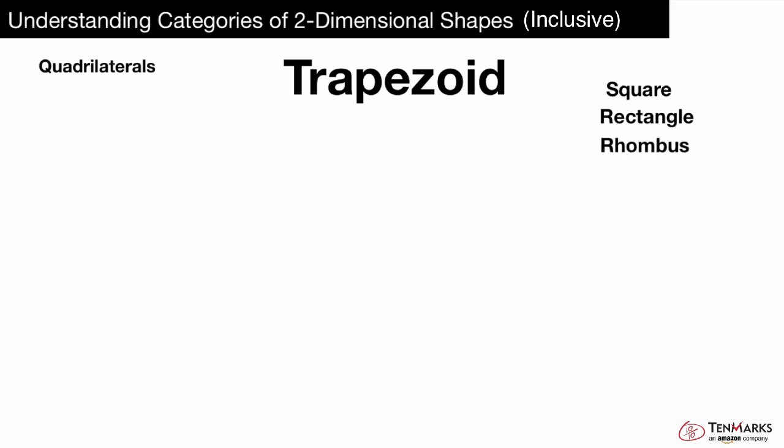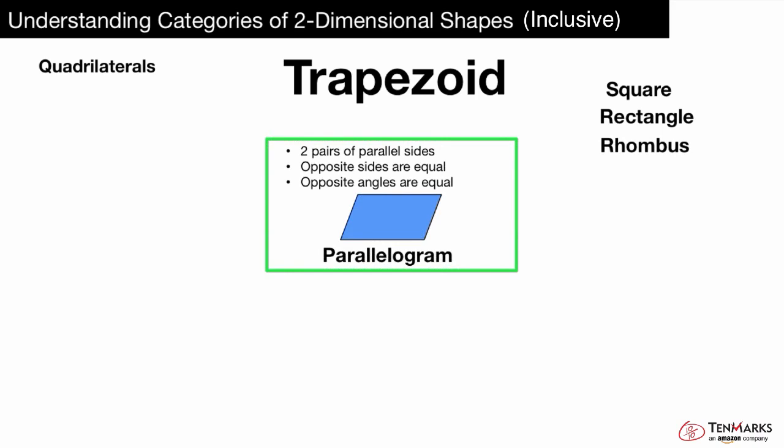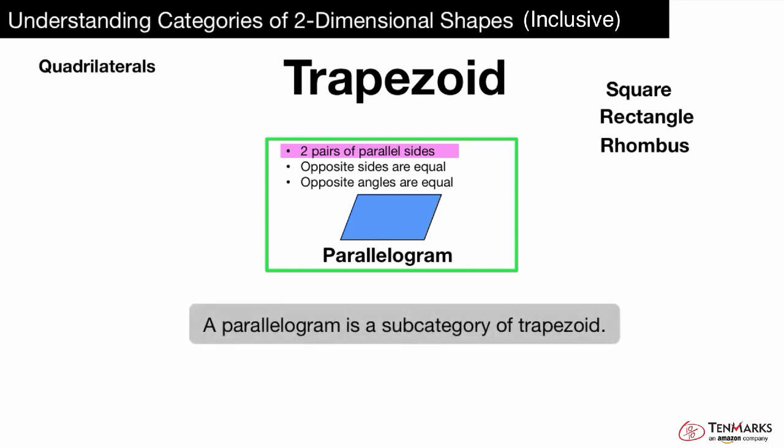Let's look at a parallelogram. Is it a special type or subcategory of trapezoid? Remember, a trapezoid, by definition, has at least one pair of parallel sides. Does a parallelogram have at least one pair of parallel sides? Yes, it actually has two pairs of parallel sides. So that means a parallelogram is a special type or subcategory of trapezoid.